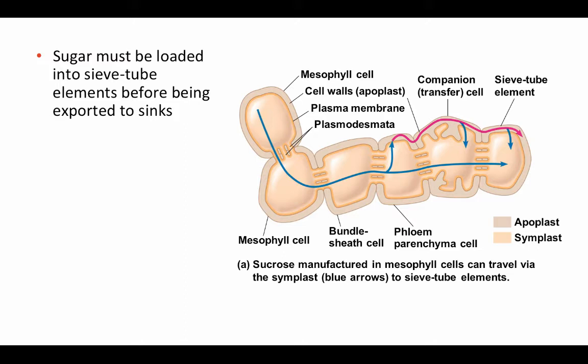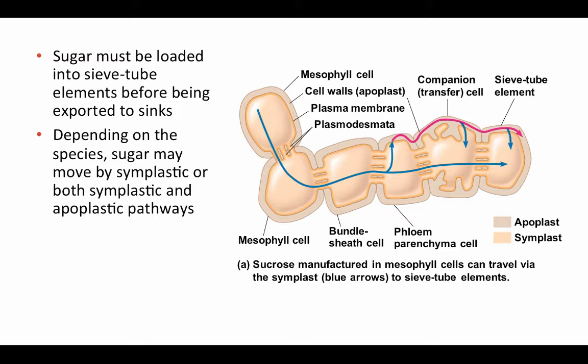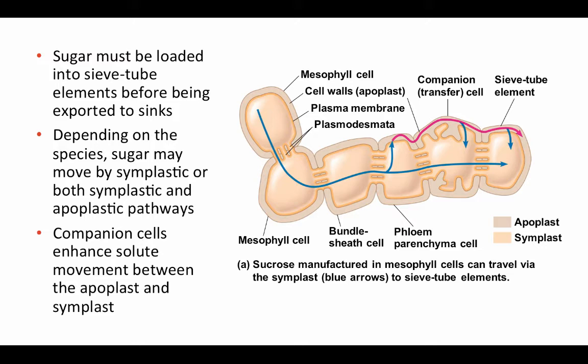To get to the place where sugars are going to be used, the sugar has to be loaded into sieve tube elements before it can be exported to sinks. Depending on the species, sugar might move into sieve tube elements by symplastic routes — entirely within the living part of the cell — or by both symplastic and apoplastic pathways. Companion cells enhance the solute movement between the apoplast and the symplast, helping to enhance movement into the sieve tube element.